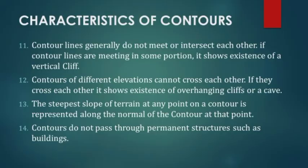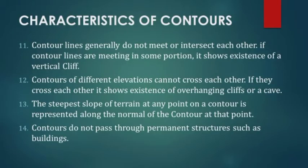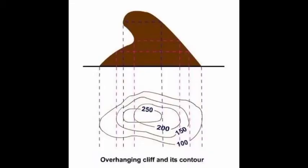Characteristic 11: contour lines generally do not meet or intersect each other. If contour lines are meeting at some point, it shows the existence of a vertical cliff. Normally these lines do not intersect, but as shown in this figure, a vertical cliff causes overlapping of a number of contour lines at a single point. Characteristic 12: contours of different elevations cannot cross each other. If they cross each other, it shows the existence of an overhanging cliff or cave.